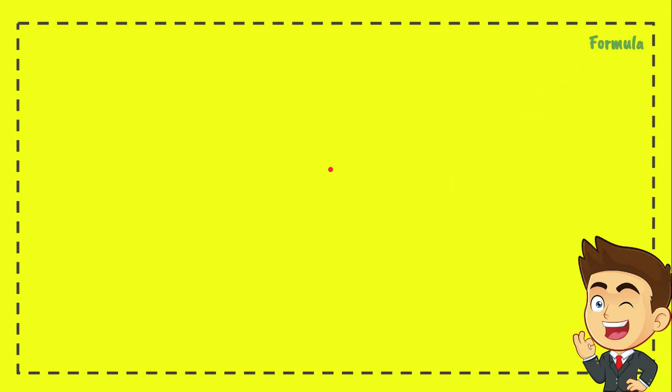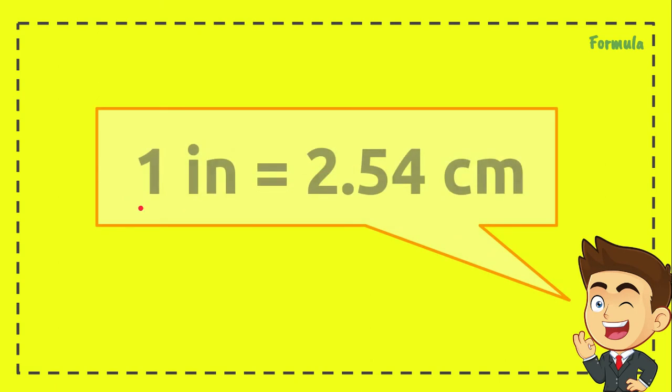formula that we will use to solve the problem. You can call this the conversion factor of inches to centimeters. So, 1 inch equals 2.54 centimeters, and we are going to use it in the next step.